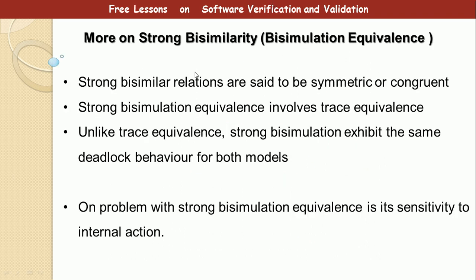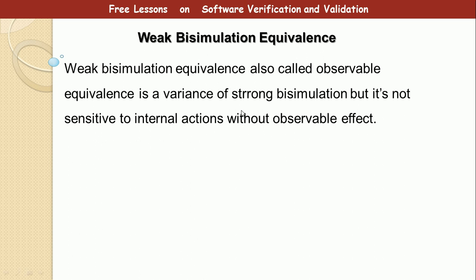That is what we mean by strong bisimulation equivalence — these two are equivalent. Some details: strong bisimulation equivalence is said to be symmetric or congruent. It also involves trace equivalence, meaning if two transition diagrams are related by strong bisimulation equivalence, they automatically also exhibit trace equivalence. Unlike trace equivalence, strong bisimulation exhibits the same deadlock behavior for both models — if one is deadlock-free, the other is automatically deadlock-free. One problem with strong bisimulation equivalence is its sensitivity to internal actions.